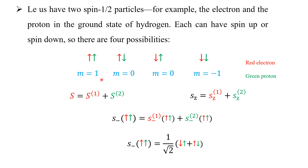When S₁ plus S₂ equals 1, the total spin is 1. When one is up and the other is down, the total M is 0 — either electron up and proton down, or electron down and proton up. When both are down, the total M is minus 1. So the M values are plus 1, 0, 0, and minus 1. Notice that there are two cases giving M equal to 0.